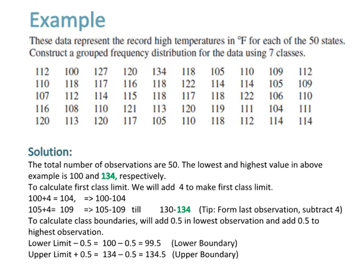Find the range by subtracting 100 from 134 to get 34. After that, find the width by dividing 34 by 7 classes, which equals 4.9. So you can try 5 or 4 to get 7 classes by adding to the lowest value in data. By adding 4 to 100 to get 104 and so on, you can find class limits.